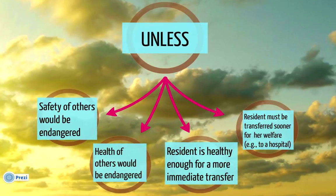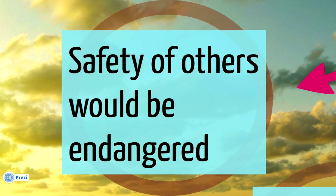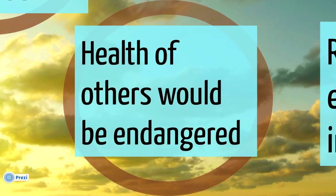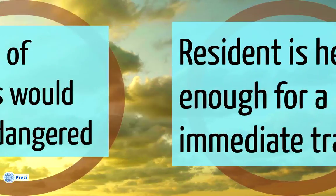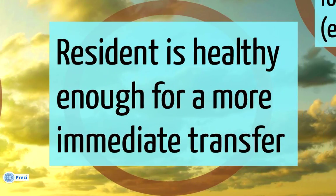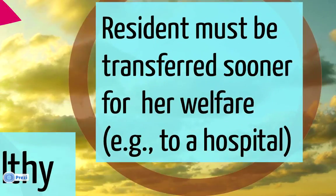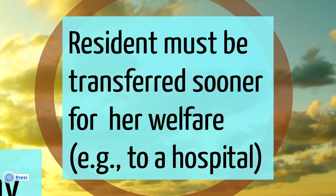Although 30 days is the typical timetable for discharge, there are some exceptions. The first exception is where the safety of others in the facility would be endangered and a more immediate transfer is necessary. The second exception is where the health of others would be in danger and a more rapid transfer must take place. The third situation is where a resident is healthy enough for a more immediate transfer and it doesn't make sense for the resident to stay the full 30 days. The final exception is where a more immediate transfer is necessary for the health of the resident.